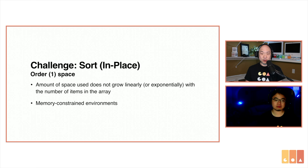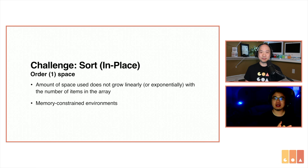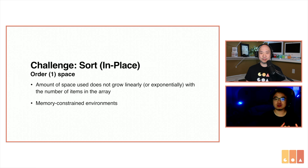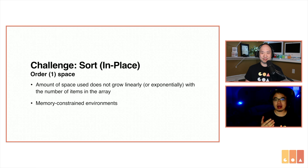The extra challenge this week is sorting it in place with O(1) space. So what does order one space mean, Ronald? Normally when we do big O notation it talks about time complexity, but in this case we're looking for O(1) space, which means you can't create additional data structures that continue growing with the input.